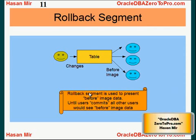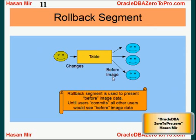So the rollback segment is used for two purposes: to help a user roll back their work, and to help create a before image of the data for everyone else. As long as the user is making changes, all other users see the before image. As soon as this person commits, everyone will get the new image of the table.